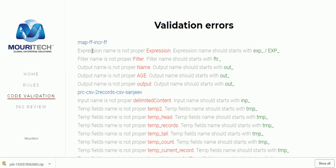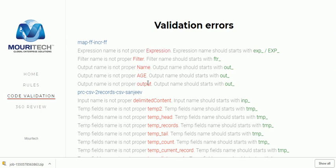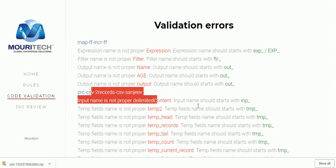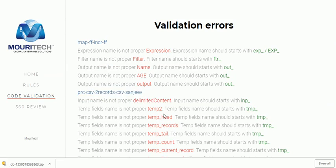Once the code is downloaded, we just need to click 'Choose File', select the file, open it, and upload. You can see here all the details — there is 'map underscore ff', 'map hyphen ff hyphen', 'incr hyphen ff' as the mapping, and then the process. It is checking each item — it is showing that this is the expression, it should start with 'exp' or 'exp underscore', but the name given is just 'expression'. Similarly for filter and name — these transformations and variables used are not correct. The output variable name is 'name' but it should start with 'out underscore'. This is how it tells you which code is not following proper naming conventions.